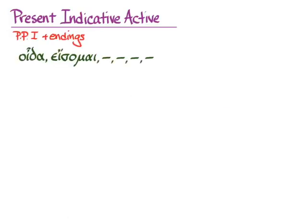This verb, oida esomai, looks a little strange in the first principle part, and that's because that principle part, which we expect to be the present tense and have an omega at the end or perhaps a mi at the end, doesn't. It has an alpha because really it's a perfect that we use as the present.